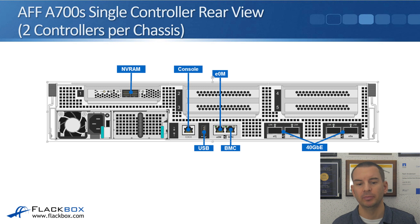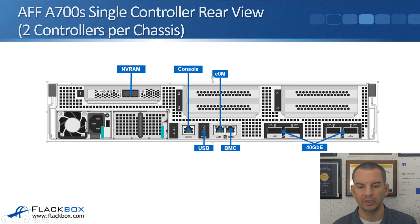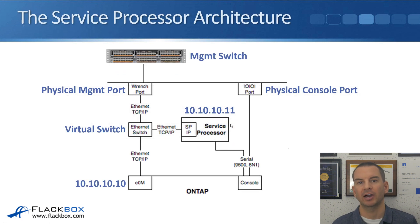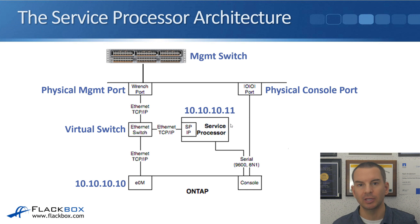On the A700S, it has a BMC. Looking at the back of the A700S, we can see the console port for management, the E0M port for management over IP, and a separate port for the BMC. All the other current models have a service processor rather than the BMC. With the service processor, it doesn't have its own separate physical port — it's actually reached through the E0M port.